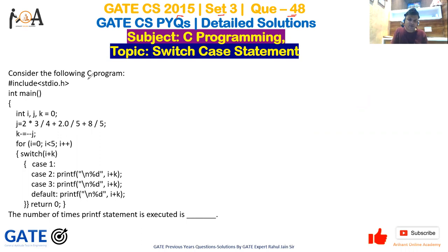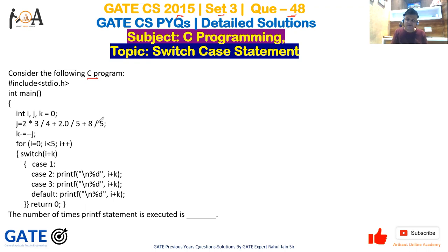Consider the following C program: we have hash include stdio.h, int main, and three variables i, j, k which are initially initialized to 0. Thereafter we have initialization of j: 2 into 3 divided by 4, plus 2.0 divided by 5, plus 8 divided by 5.